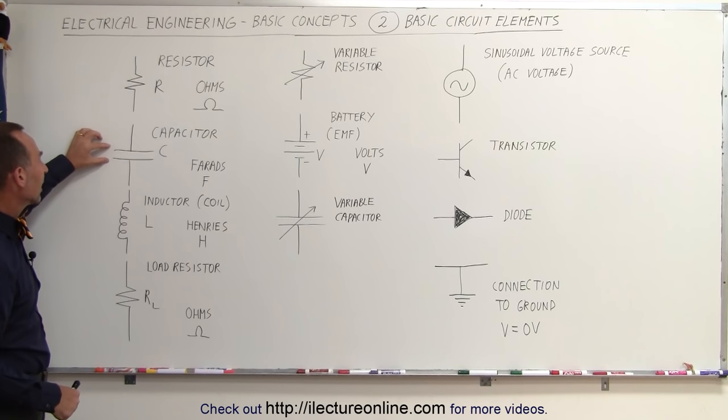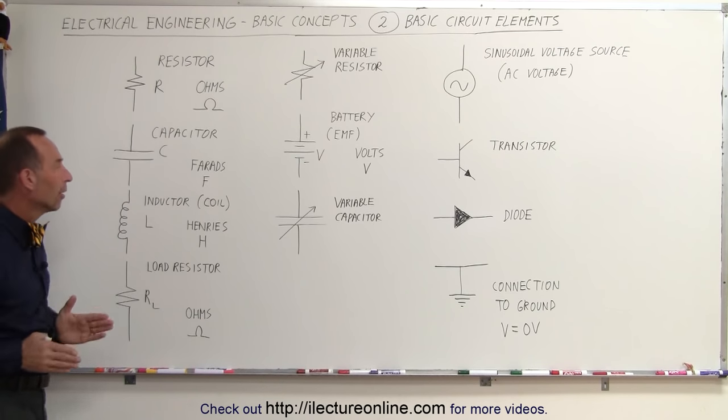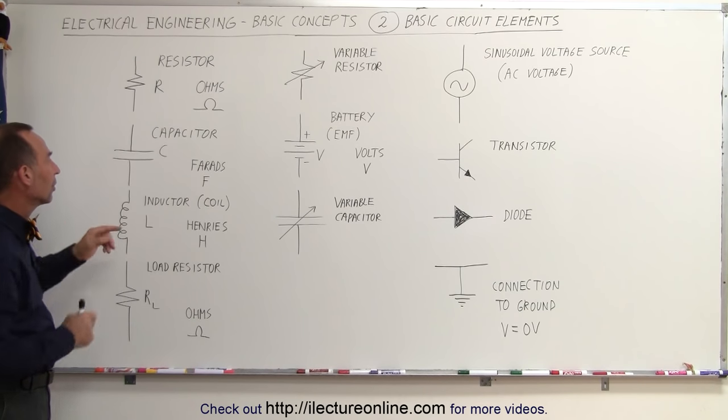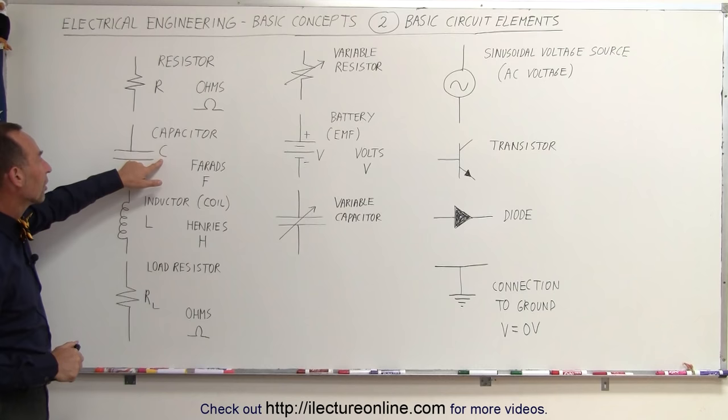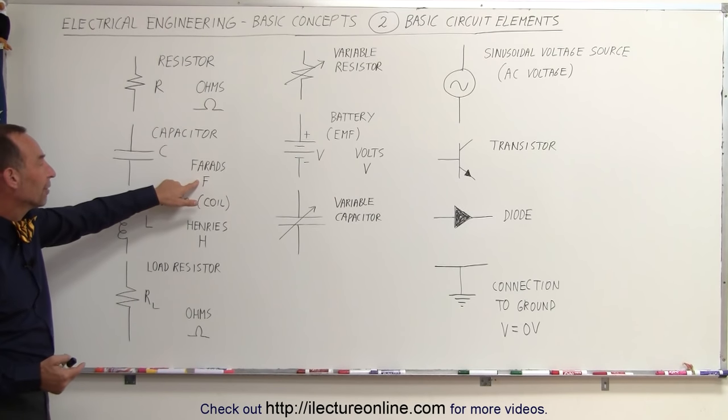We have two lines together like this inside a circuit. This is called a capacitor. That represents two capacitor plates very close to one another, opposite to one another like that. This is called the capacitance, and the units we use is farads, and the letter for that would be F.